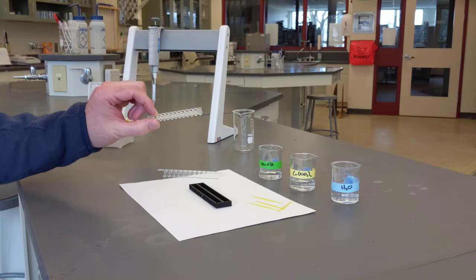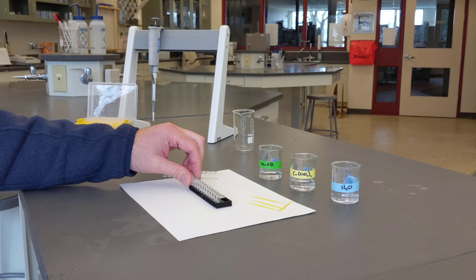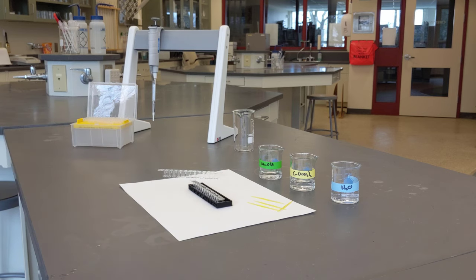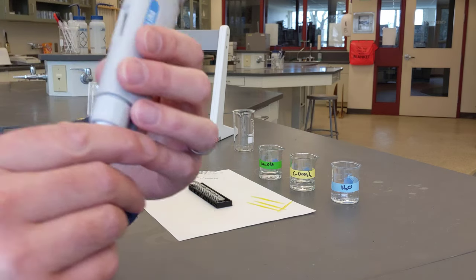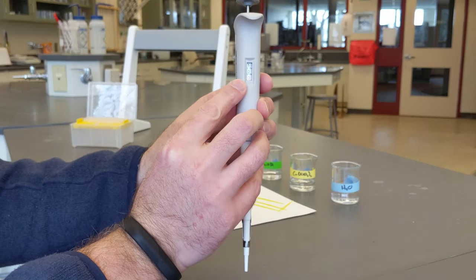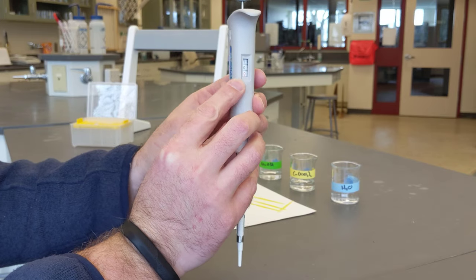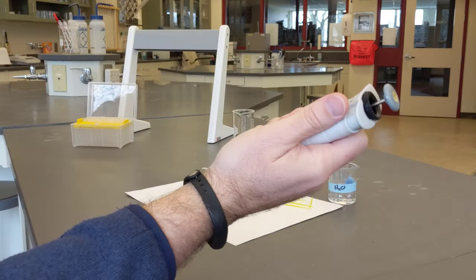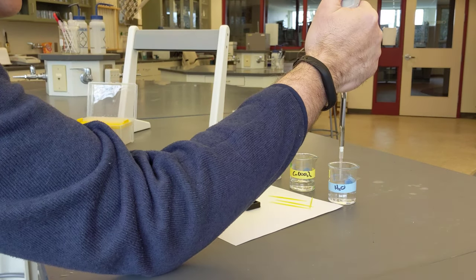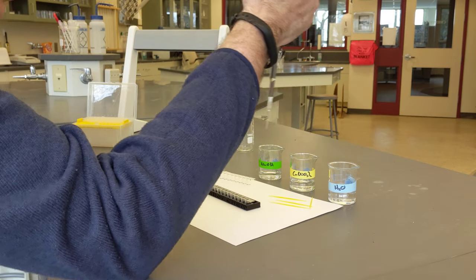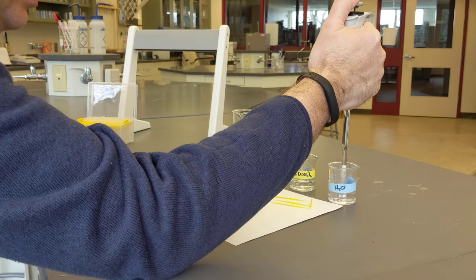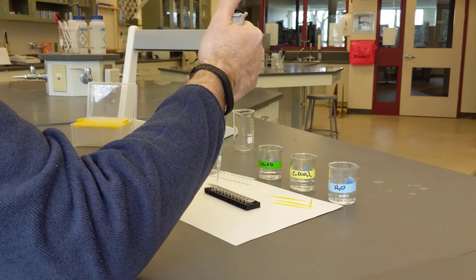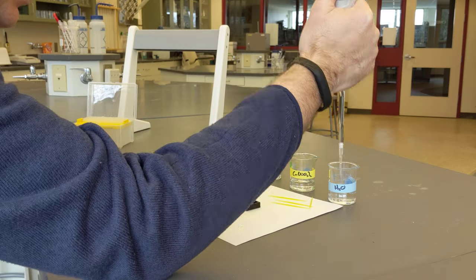I have a 12-well strip that I'm going to place into the black background. I'm going to use a micropipette. The micropipette is set to 100 microliters. We are going to put 100 microliters in wells 2 through 12. So, 1, 2, 3, 4.